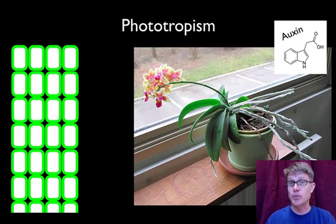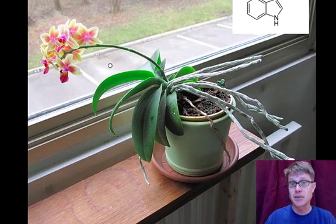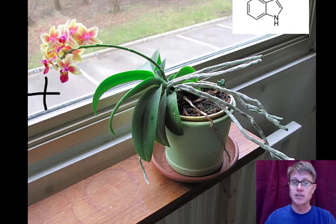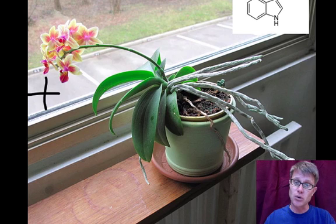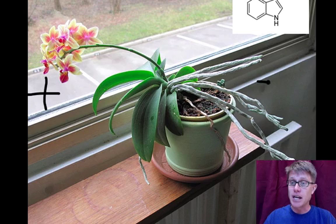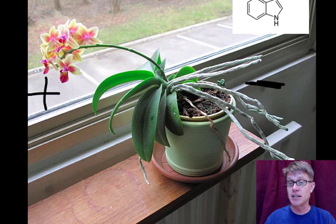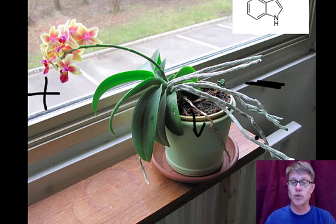Let's start by talking about phototropism. Phototropism is growth towards light — we call that positive phototropism. So if a plant grows, light's over here and it's growing towards it. Not only is the stem growing towards it, but all the leaves are oriented so they can pick up the maximum amount of light. Negative phototropism would be growing in the other direction. So immediately when you plant a seed, the roots are going to show negative phototropism — they're actually going to grow down into the dirt, away from the light.